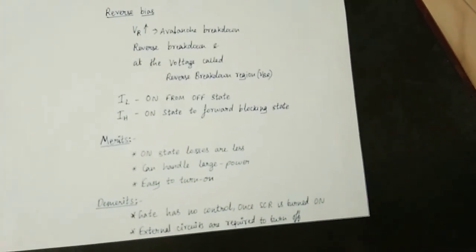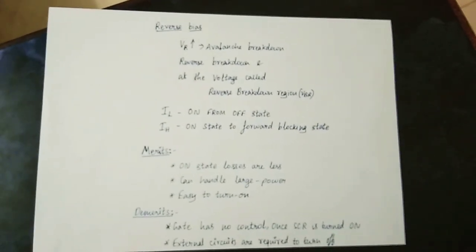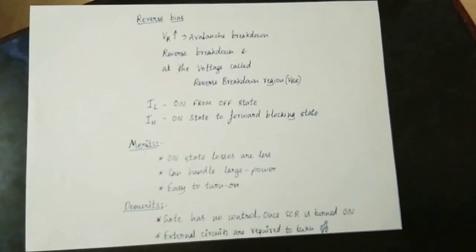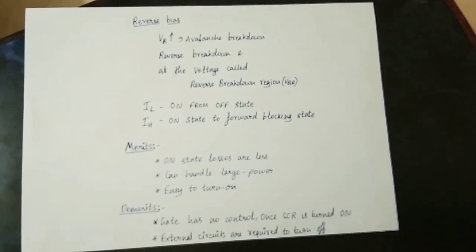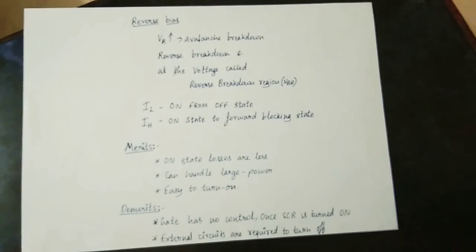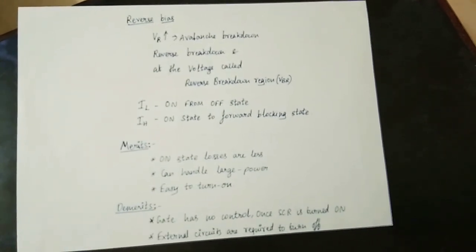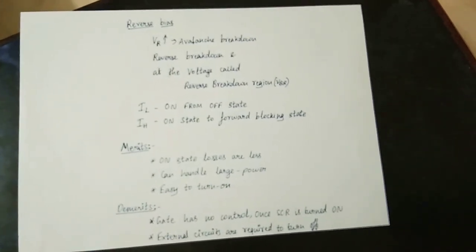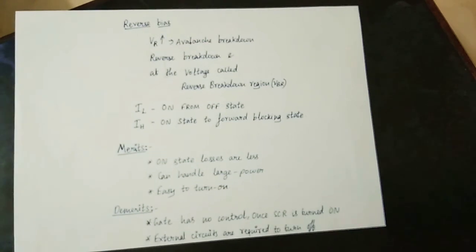Once the SCR is in on state, you maintain that state with current. Turn off can be done by applying reverse voltage or reducing current to zero — that is opposite to reverse bias voltage. The SCR is then turned off. Once turned on, gate control is lost — you cannot turn off via the gate alone.